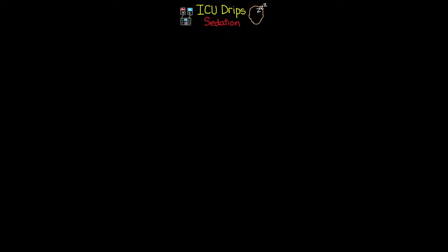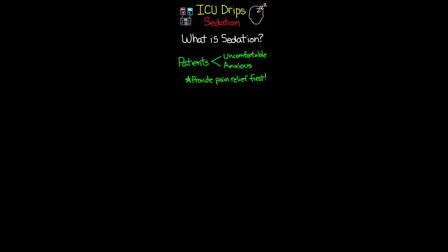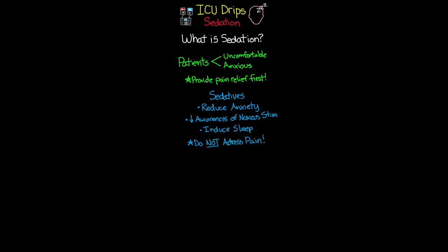Let's get into our lesson talking about sedation — what is sedation? Patients in the critical care environment are often dealing with two problems: they're either uncomfortable or anxious. One really important thing is that we want to make sure we provide pain relief first. We need to ensure our patients are pain-free or that we've addressed their pain with analgesia before we start talking about sedatives. Sedatives are a group of medications that can reduce a patient's anxiety, reduce their awareness to noxious stimuli, or induce sleep, but they do not address pain.